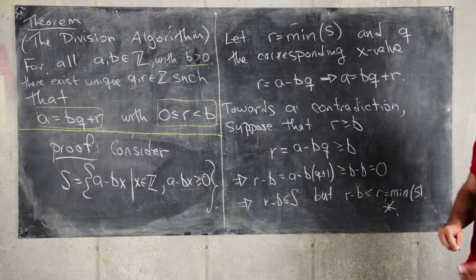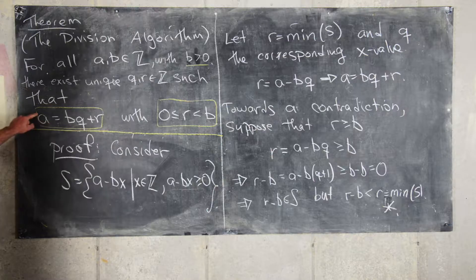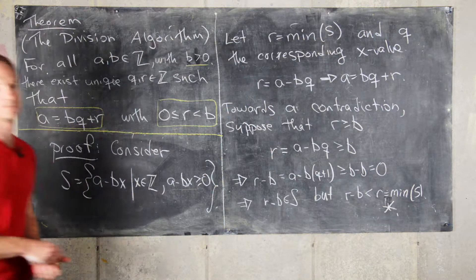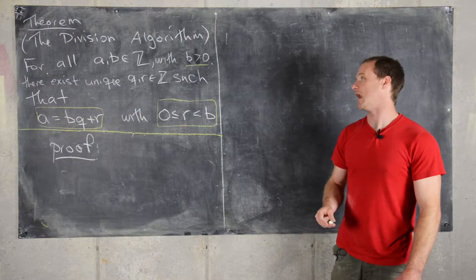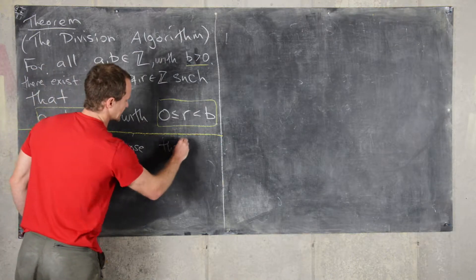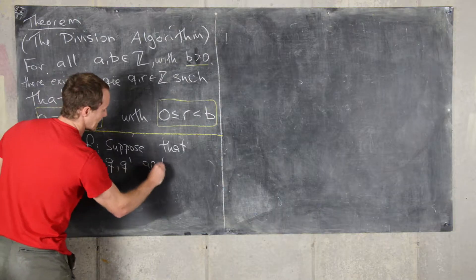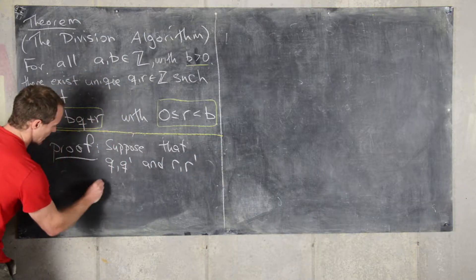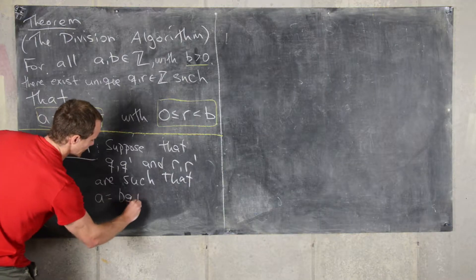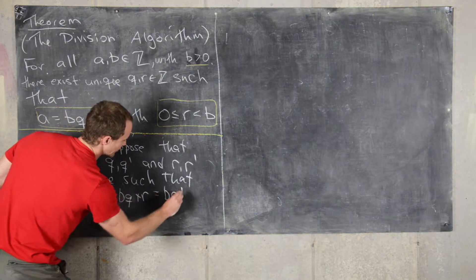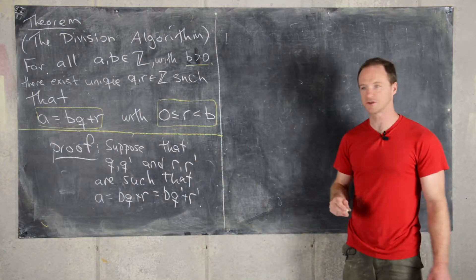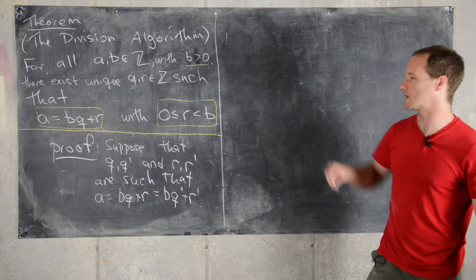So we have a value of Q and a value of R that satisfy the equation A equals BQ plus R and the inequality. All that's left to prove is that these numbers are unique. We'll prove uniqueness by supposing Q, Q prime and R, R prime both satisfy A equals BQ plus R equals BQ prime plus R prime.